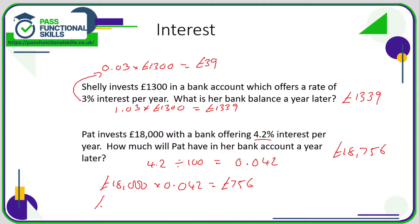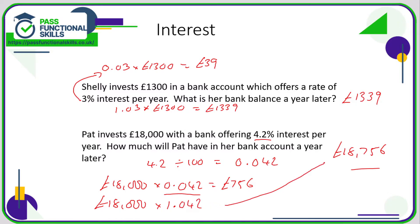Alternatively, we can go directly to this answer by doing 18,000 multiplied by the multiplier for a 4.2% increase, which is 1.042 — that's the basic multiplier with 1 added to it. 18,000 times 1.042 takes us straight to £18,756.